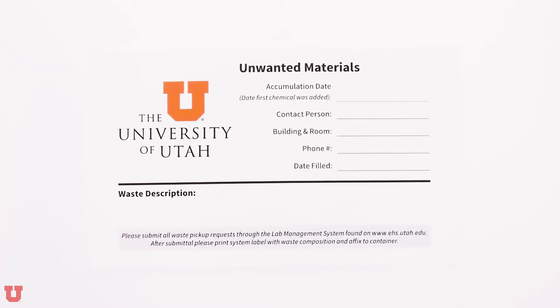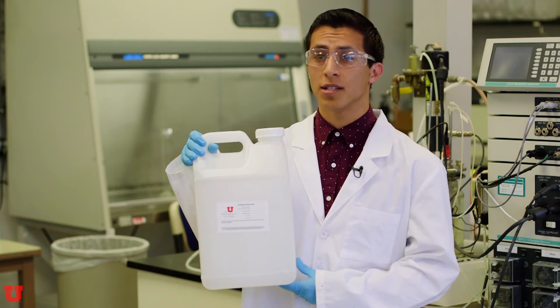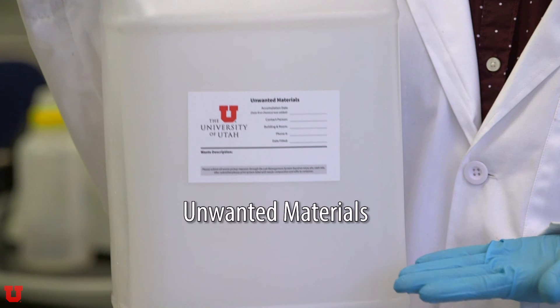Make sure to properly label all unwanted materials, formerly known as waste, containers. Due to changes in EPA regulations, waste containers should not be labeled with the word waste. They should instead be labeled with the words unwanted materials. Include a list of the contents on the label as well.